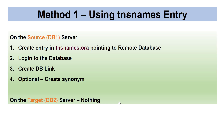There are two methods for setting up a DB link: one using the tnsnames.ora entry, and another without using tnsnames.ora. If you use the tnsnames.ora file, the steps are: create an entry in tnsnames.ora on the source server pointing to the remote database, log into the database, create the DB link, and optionally create a synonym. On the target server, you don't have to do anything — everything is done on the local server.